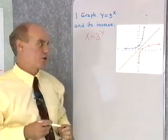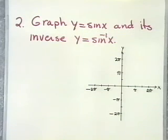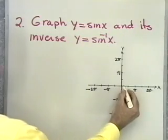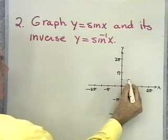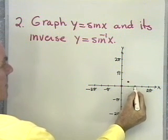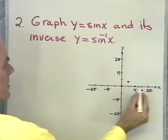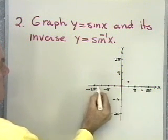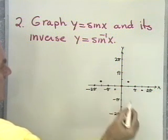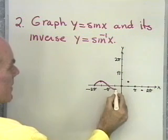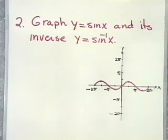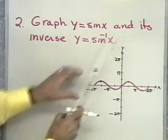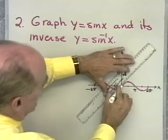I want to do the same thing now with our first trigonometric function. Let's graph y equals sin x and its inverse, y equals inverse sin x. y equals sin x has amplitude of 1 and period of 2 pi. It starts at 0; at pi over 2 it goes up to 1 — pi over 2 is about 1.57, so 1 is right there — back down to 0, down to negative 1, back up to 0. Same thing in the other direction.